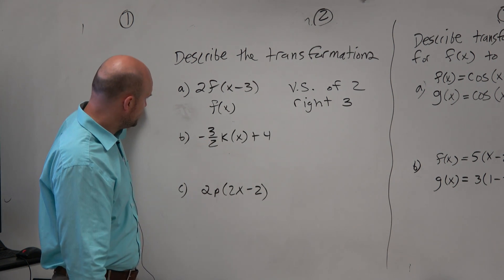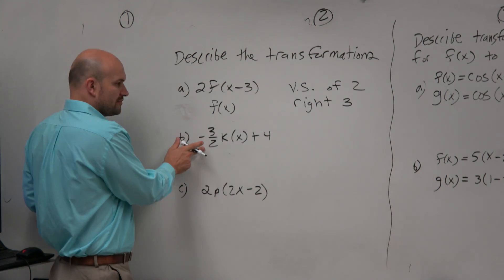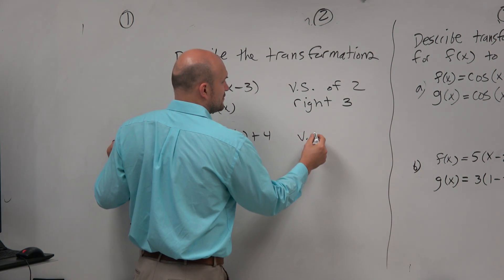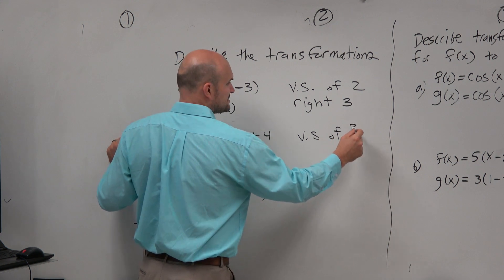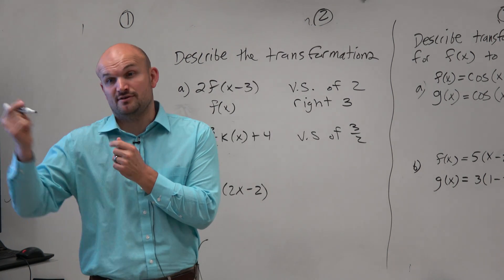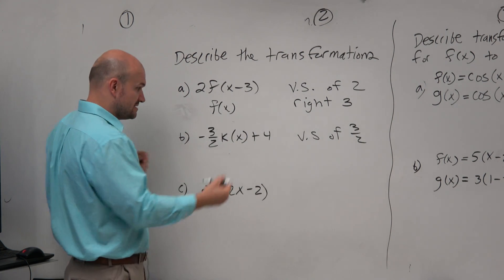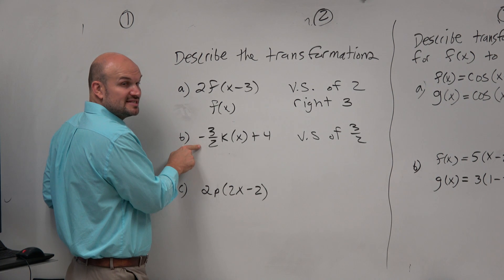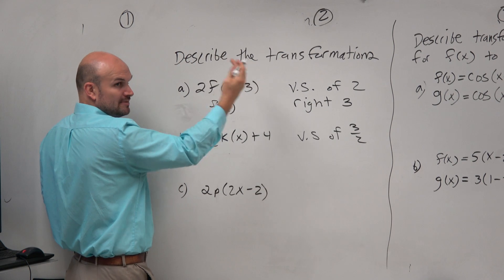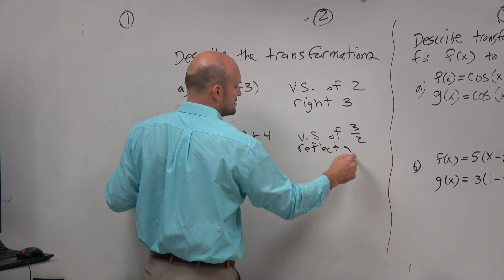Looking at the next one, you can see we have negative 3 halves. Now this is an important one. A lot of people see a fraction and say that's a compression — but 3 halves is larger than 1, so that is a vertical stretch of 3 halves. The negative? When dealing with stretch and compression, we use the absolute value of a. But the negative is important: multiplying by negative on the outside means it's a vertical reflection. We don't want to reflect about the y-axis — that would be a horizontal reflection. So it's a reflection about the x-axis.